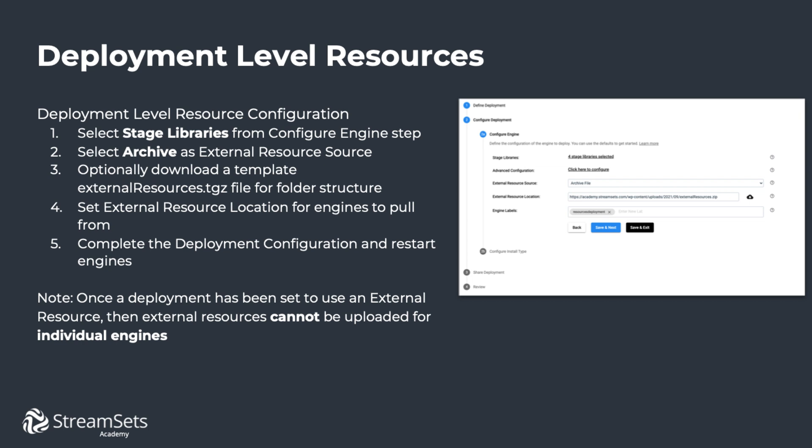To install at the deployment level, we need to first edit the deployment configuration and go to the engine configuration. Next, we need to select Archive as the external resource source and set the location of where execution engines can pull the archive file from. Then we just go ahead and complete the deployment configuration.